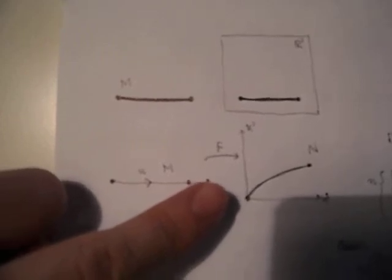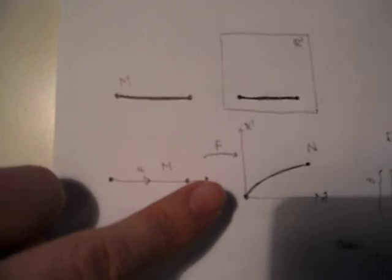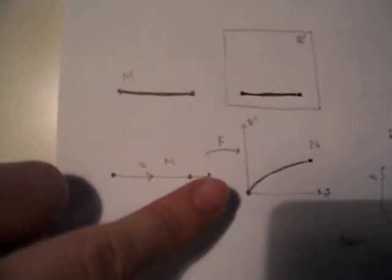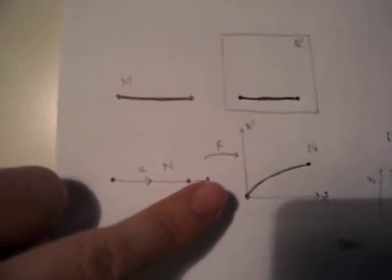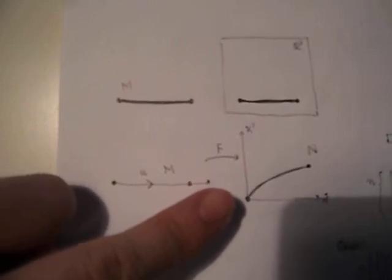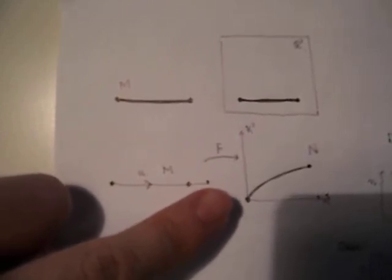And when you read about manifolds you will read a lot about whether it's how many times differentiable, so just say it's C infinity. That's a fancy way of saying that it's infinitely differentiable.